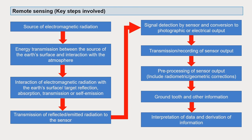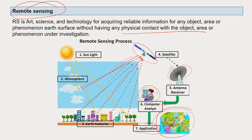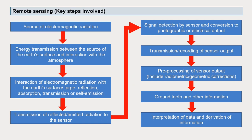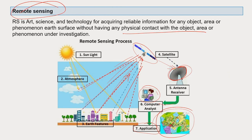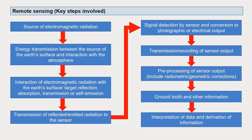In remote sensing, there are a few key steps involved. The first step is the source of electromagnetic radiation — unless some signal goes out, the satellite will not be able to capture anything. The satellite can only send signals to the antenna when it gets signals from different surfaces. Once electromagnetic radiation is obtained, energy transmission takes place between the source and the surface, and it passes through the atmosphere before reaching the satellite.